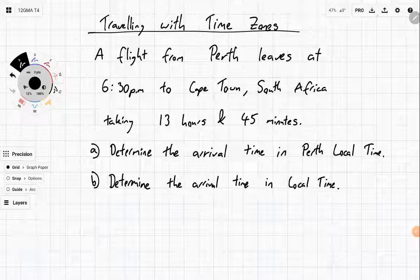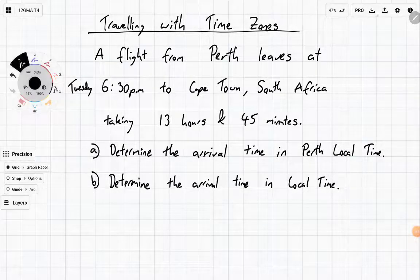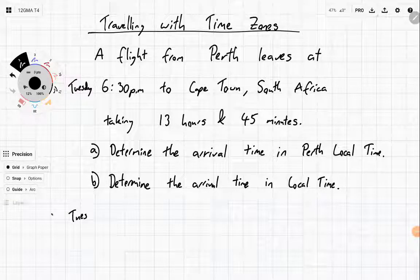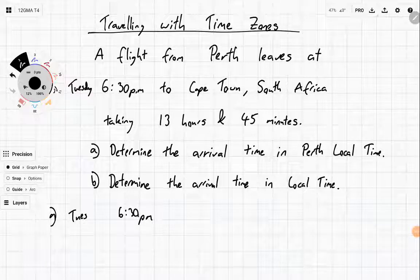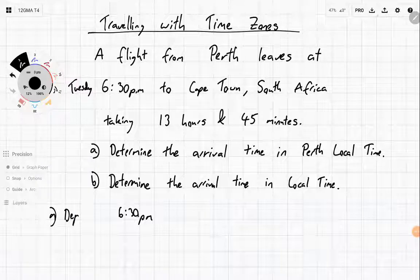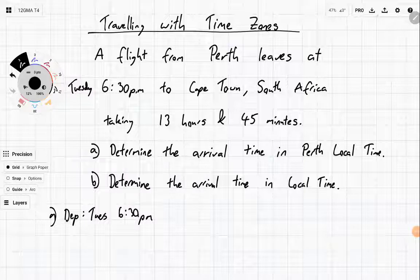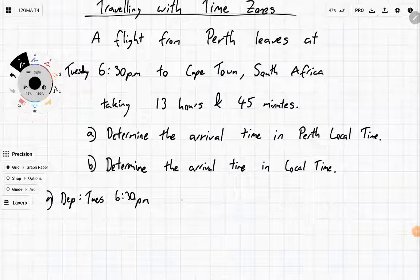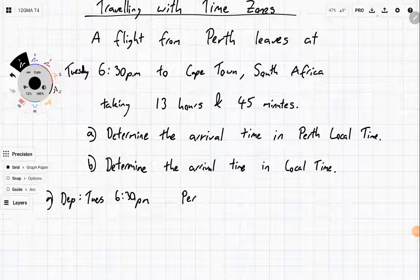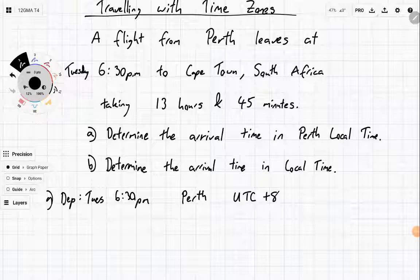I often like to really work through this carefully. It's Tuesday, and the time is 6:30pm. We are departing at this time on Tuesday at 6:30pm. Now the flight is taking 13 hours and 45 minutes. This is in the location of Perth, but in UTC plus 8 — because that's Perth time.